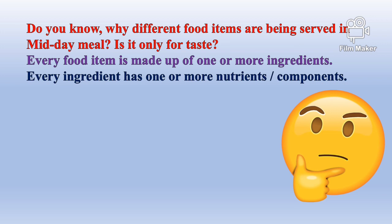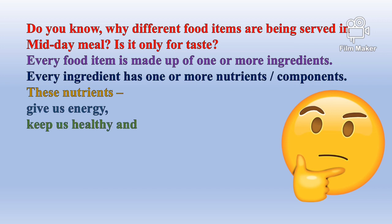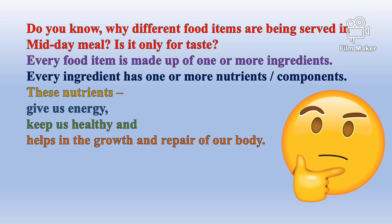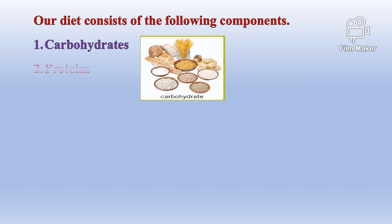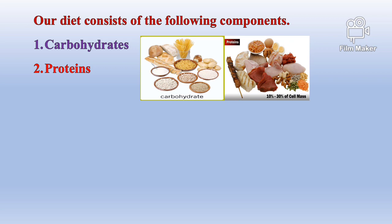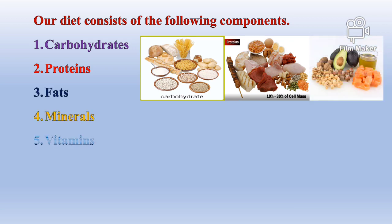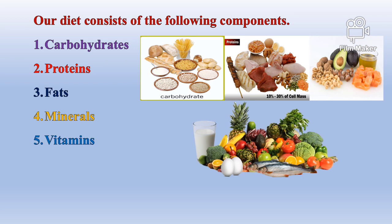In fact, every food item is made up of one or more ingredients. Every ingredient has one or more nutrients or components. These nutrients give us energy, keep us healthy, and help in the growth and repair of our body. Our diet consists of the following components: carbohydrates, proteins, fats, minerals and vitamins.